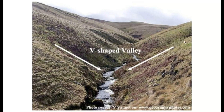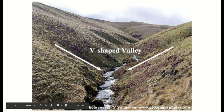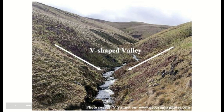Our first process for forming a V-shaped valley is vertical erosion, which cuts down and gives the valley its depth. This is largely due to gravitational potential energy. The main types of erosion at this stage are hydraulic action — where turbulent water hits the banks and bed — and abrasion, where large angular rocks and boulders scrape away at the river bed.